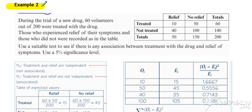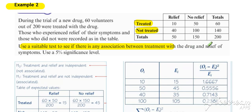Considering example two, very often in a goodness-of-fit test on a contingency table, what we're testing is whether there's an association between two different criteria — for example, between being treated or not treated by a drug and whether there has been relief from symptoms. Testing to see whether there's an association between the two, or testing whether there's independence between the two, is the same thing. It's just how you conclude the outcome that's important.